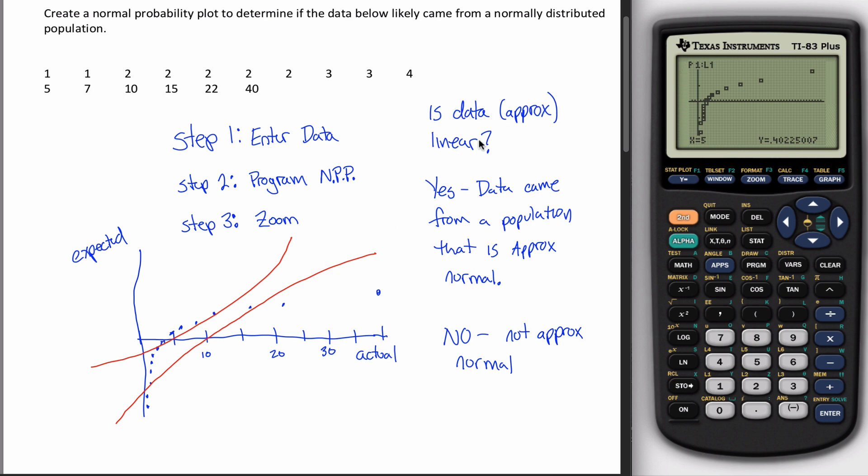the question of, is the data approximately linear, can be restated as, do all observations fall within the bands?